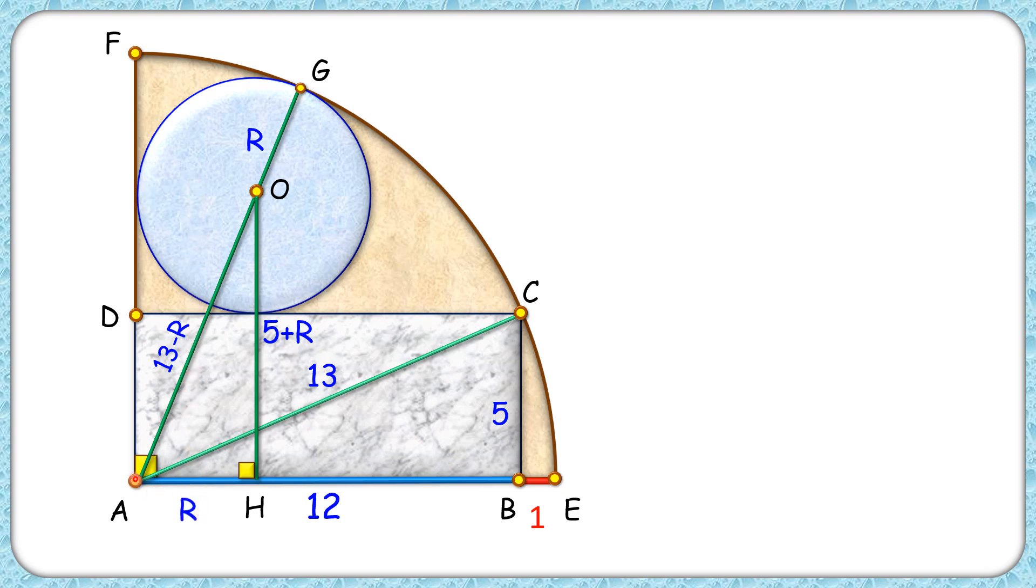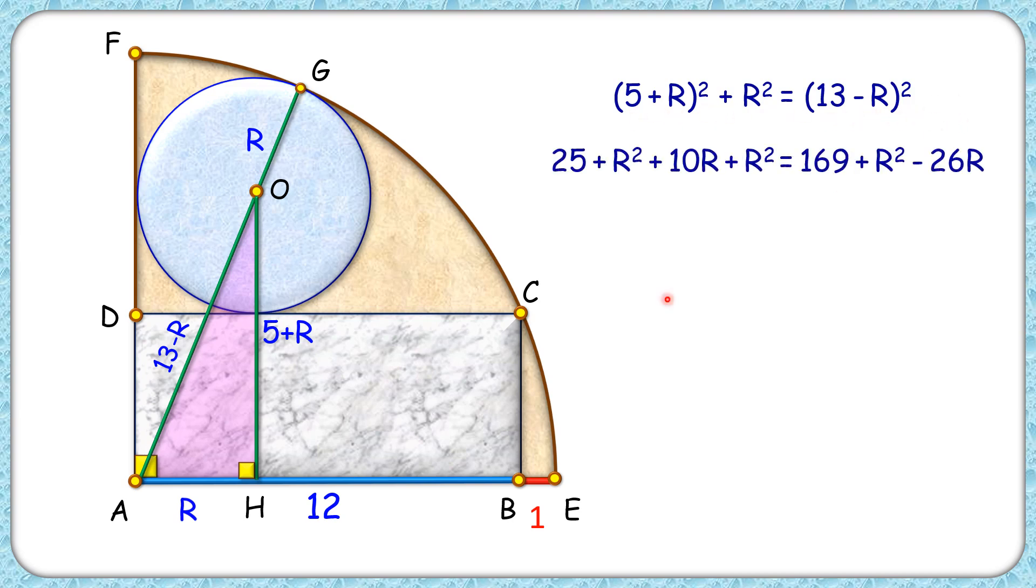Now in triangle AOH, we'll apply Pythagoras theorem. So we'll get (5 plus R) squared plus R squared equals (13 minus R) squared. Opening up the brackets on both sides and solving it, we get R squared getting cancelled on both sides. Now simplifying it, we'll get a quadratic equation formed here.